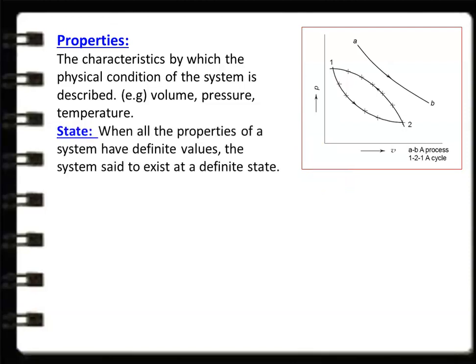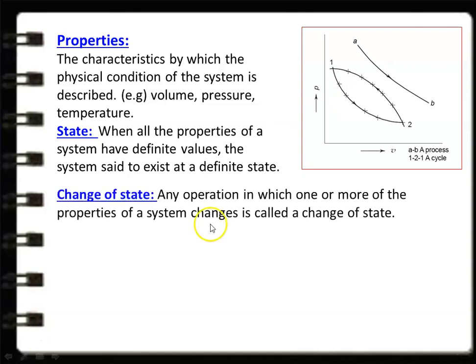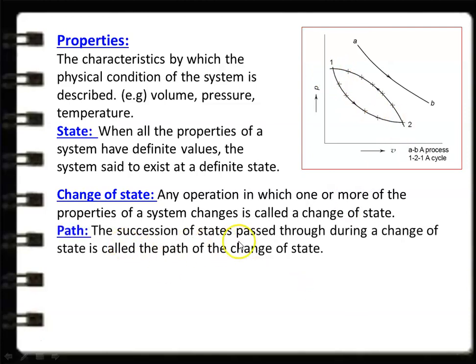We then define the state: when all properties of the system have definite values, the system is said to exist in a definite state. So states 1, 2, A, and B represent different states. For example, atmospheric state means atmospheric pressure of 760 mmHg and atmospheric temperature of, say, 38 degrees Celsius. A change of state occurs when one or more properties of the system change. The succession of states passed through during a change of state is called the path — so 1 to 2 is a path, 2 to 1 is a path, A to B is a path.